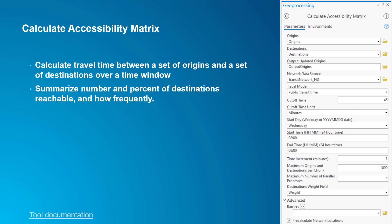Calculate Accessibility Matrix calculates the OD cost matrix incrementally over a time window and then summarizes the results over time. It counts the number of destinations accessible at least once during the time window as a sort of best-case scenario. It also breaks down the counts by setting a series of thresholds — for example, you can see how many destinations were accessible at least 50% of start times.